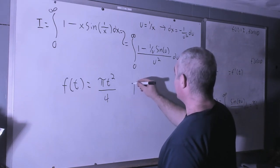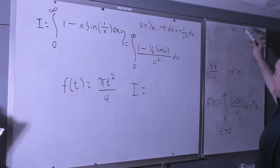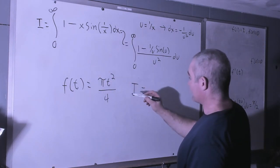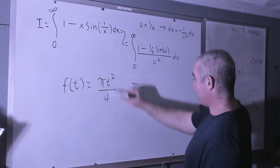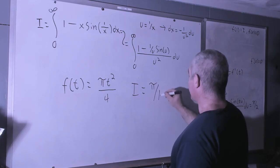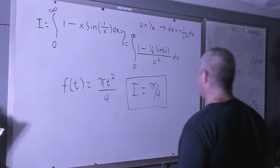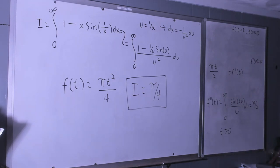We know that our original integral equal to f evaluated at one. This is going to be this thing evaluated at one and that's pi over four. Same answer he got. He got it a different way. I like this way better. Of course since this is a channel on Feynman integration I always like Feynman integration better than everything else. So there you go.